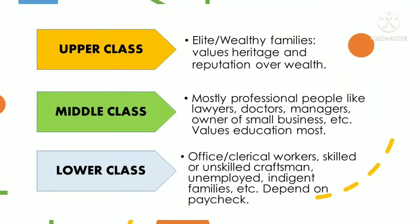The upper class consists of elite or wealthy families who are the most productive in their respective areas. They value heritage and reputation most over wealth. They are mostly born into wealthy families with high status and prestige. Some examples of the upper class are royal families and old families that own huge corporations with rich heritage or have great political power.